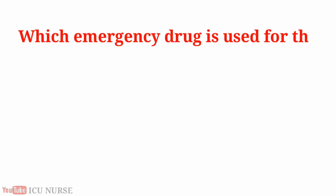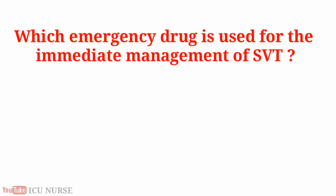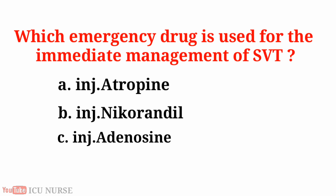Which emergency drug is used for the immediate management of SVT, supraventricular tachycardia? A. Injection atropine, B. Injection nicorandil, C. Injection adenosine, D. Injection heparin. And the answer is C. Injection adenosine.